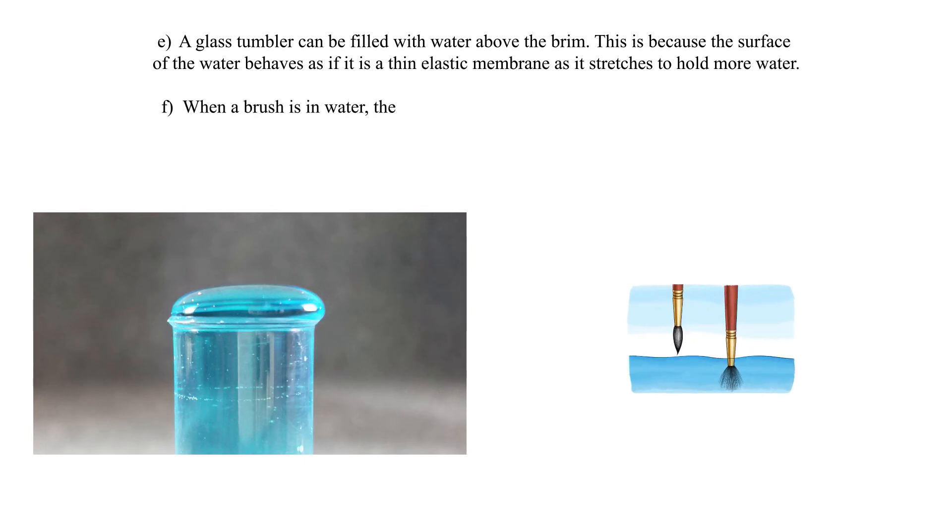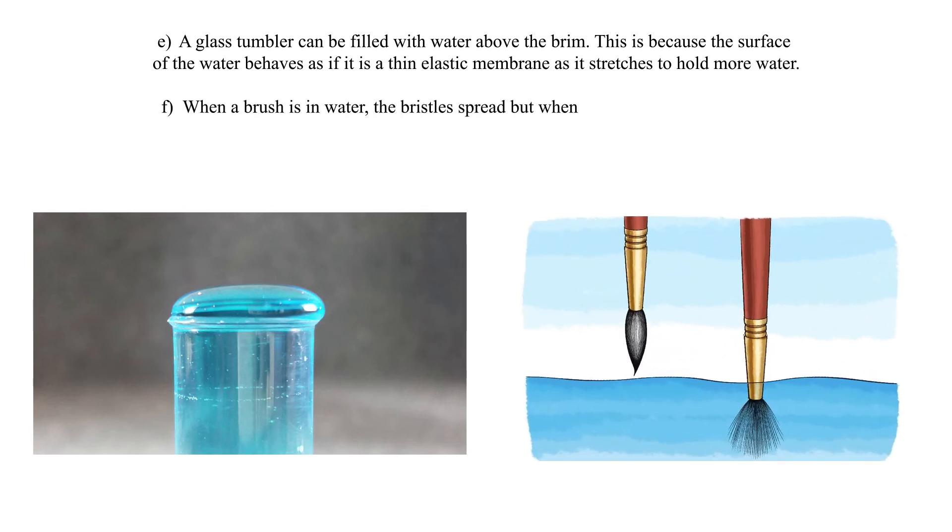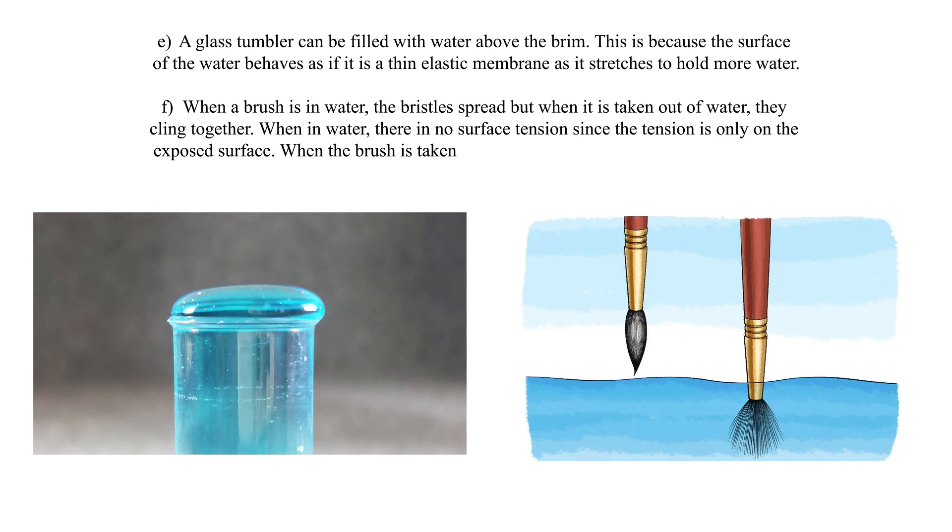F. When a brush is in water, the bristles spread, but when it is taken out of water, they cling together. When in water, there is no surface tension since the tension is only on the exposed surface. When the brush is taken out of the water, the surface tension acting on the surface of water tends to be as small as possible, thus pulling the bristles together.